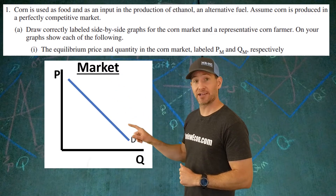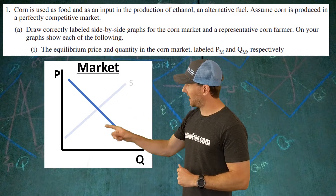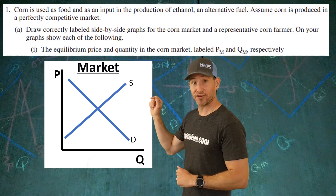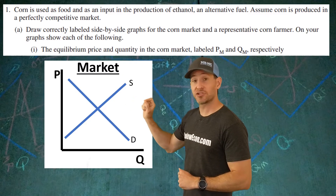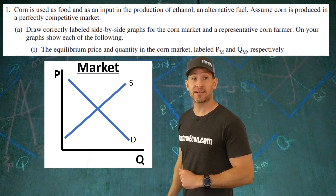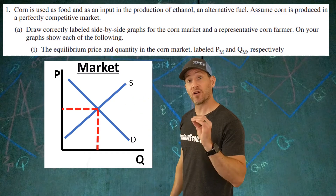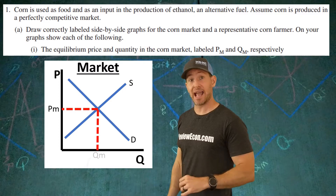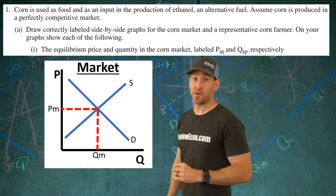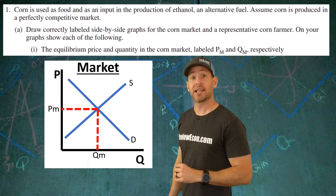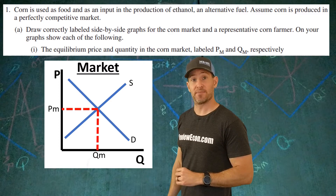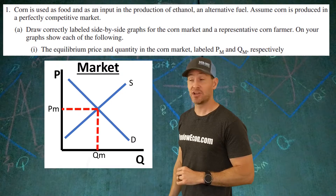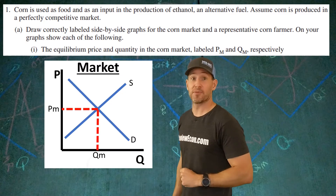Have a downward sloping demand curve and an upward sloping supply curve. Where those two curves intersect, you have your market price labeled PM and your market quantity labeled QM. If you have all that down, you've got your point for the market.